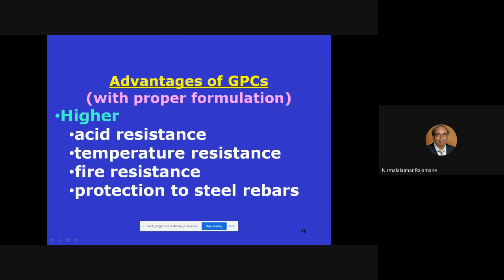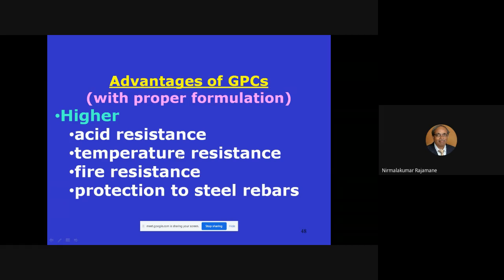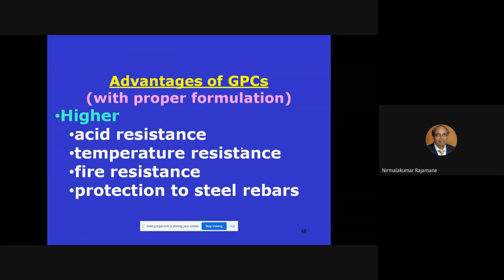Acid resistance is definitely better in geopolymer concrete because there is no calcium hydroxide present. When GGBS is used, some calcium hydroxide forms, but geopolymer by itself is not much attacked by acids — geopolymers are even used in making pyramids. Temperature resistance is generally better but requires proper formulation. Not every geopolymer concrete is fire resistant — only specifically designed formulations provide fire resistance; others are simply better than ordinary concrete but still lose some strength.